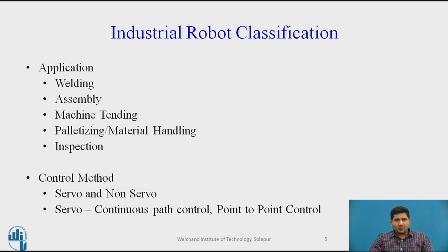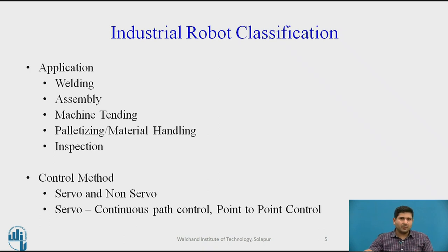In servo control robots, you have continuous path control and point-to-point control. Nowadays almost every robot will feature these control techniques — it's highly unlikely that you will get a robot which doesn't have continuous path control or point-to-point control. So that's how the evolution has taken place.